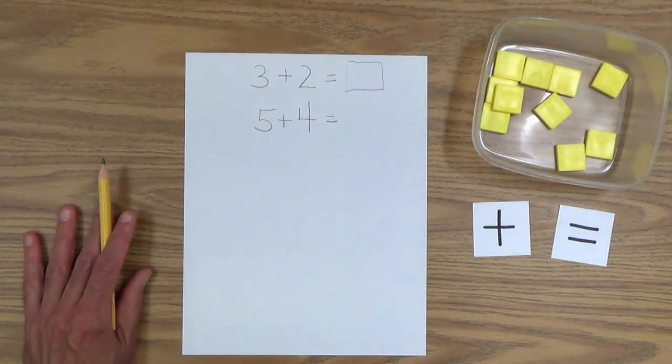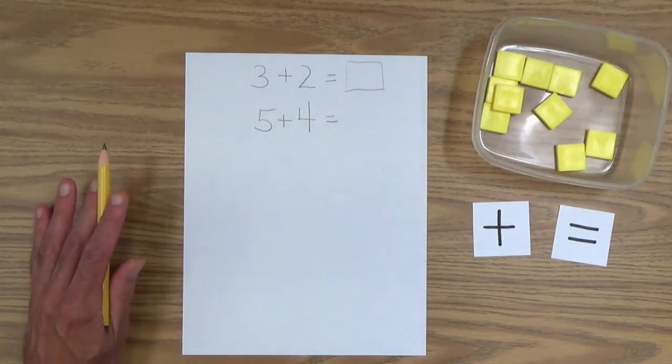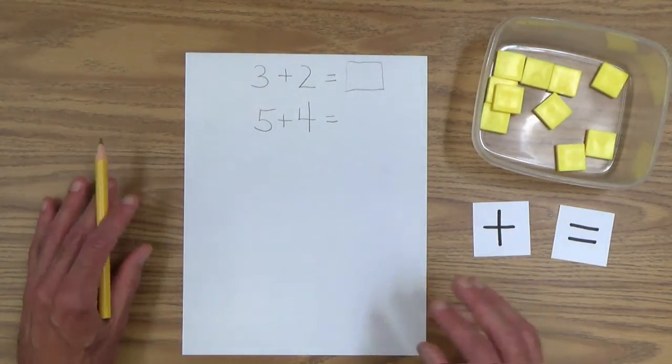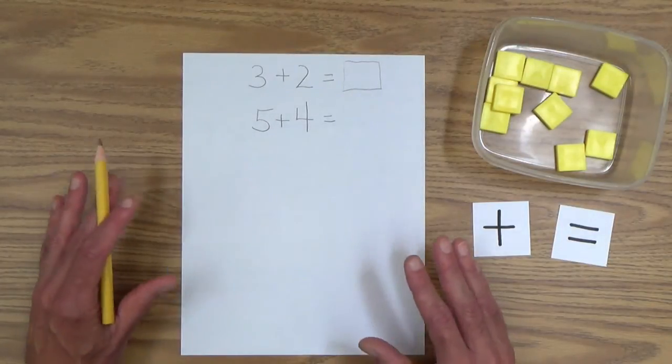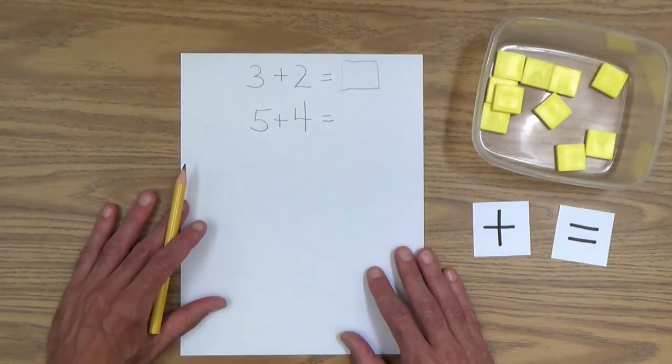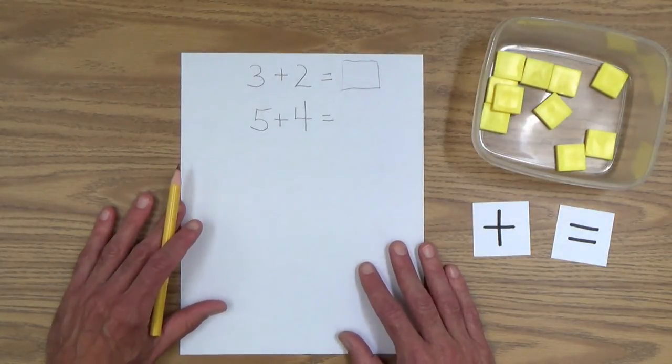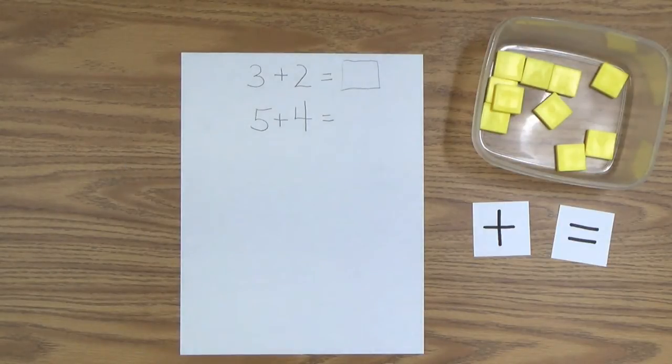And, to reiterate, numbers stand for something. Numbers always represent something. Unless your child is just doing a practice page of computations. But, ultimately, numbers are representational. They stand for a quantity of something. Very important notion to transmit to your child.